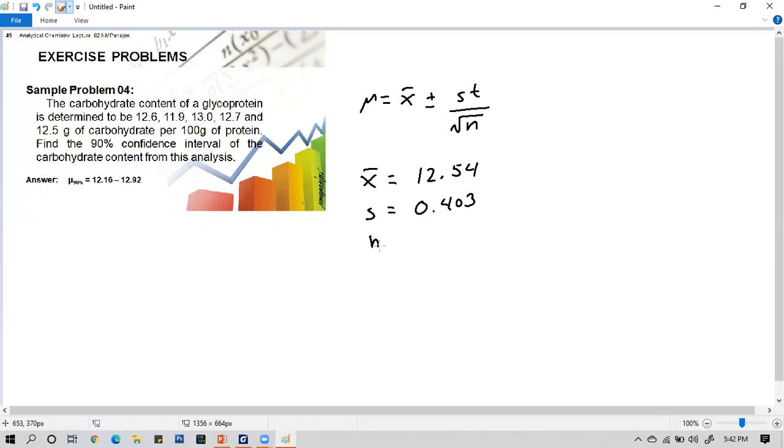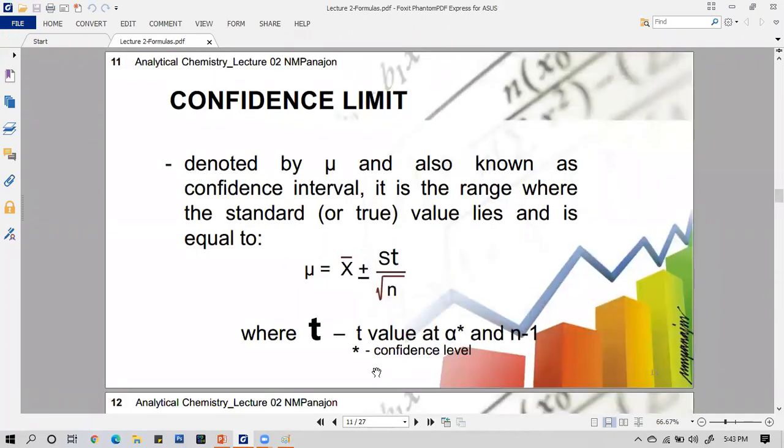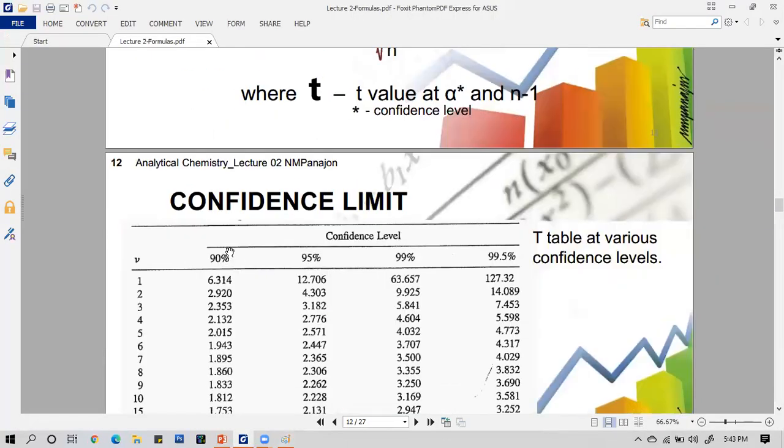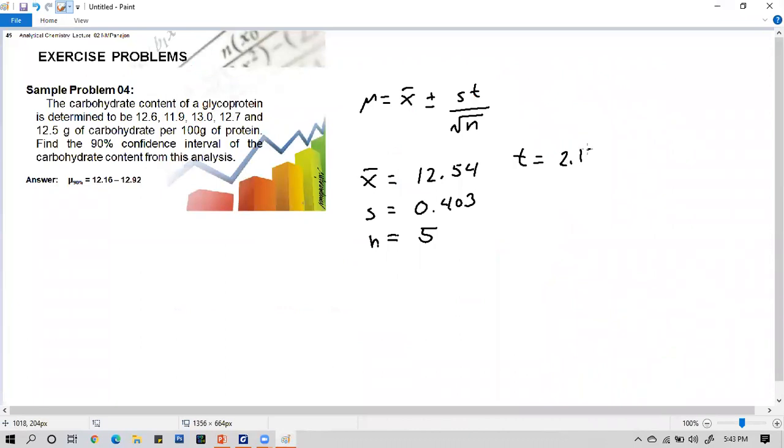The n is how many data points? There are 5 data points. What about T? For T, we determine from the confidence limit table. T value is based on n minus 1. What is the confidence level? 90%. What is the degrees of freedom? N minus 1 is 4. So the T value for this is 2.132. Now we have our given, so let's solve. U is 12.54 positive negative 0.403 times 2.132 all over square root of 5.